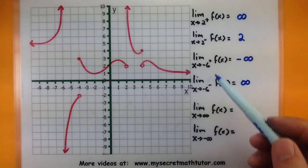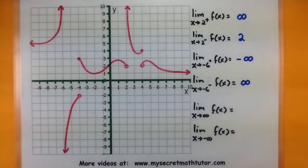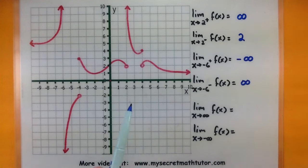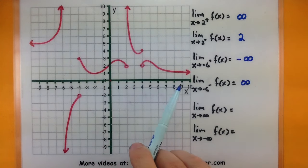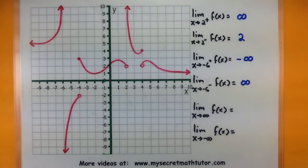Notice how in these examples, x was always approaching some number and we're doing it from the left or right side. In these last two, x will be approaching infinity or negative infinity. So imagine going down that x-axis all the way to infinity or approaching negative infinity again along the x-axis.